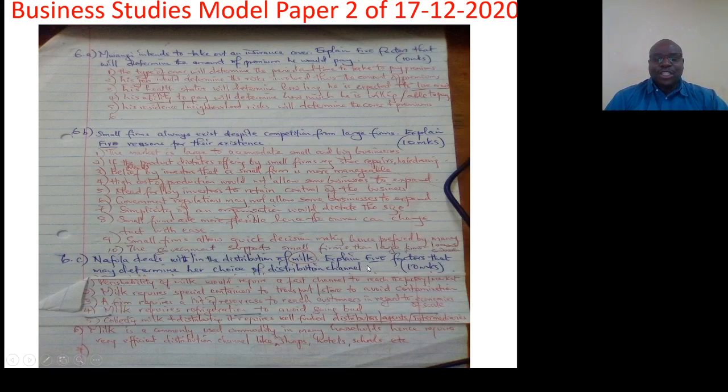Question number six C. Nairobi Fullers deals with or in the distribution of milk. Explain five factors that may determine his choice of distribution channel. One, perishability of milk would require a fast channel to reach the factory or even the market. Two, milk requires special containers to transport and store to avoid contamination. Three, the firm requires a lot of resources to reach customers in regard to economies of scale. Four, milk requires refrigeration to avoid going bad easily. Five, collecting milk and distributing it requires well-funded distributors, agents or intermediaries to reach the market or the factory in time. Six, milk is a commonly used commodity in many households hence requires very efficient distribution.